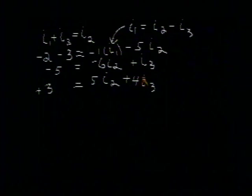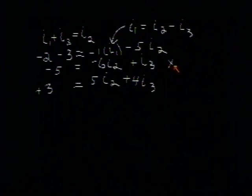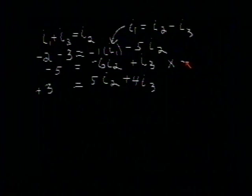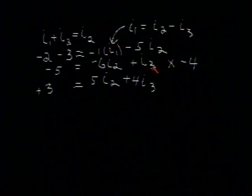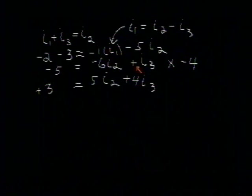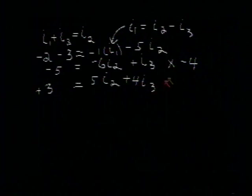Suppose we try to eliminate the I3 from these two equations. And to do that, suppose I multiply this top equation by minus 4. Why minus 4? Well, I have a 4I3 in this equation, a 1I3 here. If this was a minus 4I3, I could add it to this and they would cancel out. So, we'll try that.